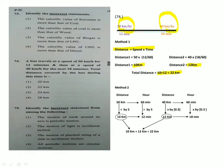An easy method: at 50 km/h, in 60 minutes the bus covers 50 km, so in 12 minutes it covers 10 km. Similarly for the second case. The total distance is 10 + 12 = 22 km.